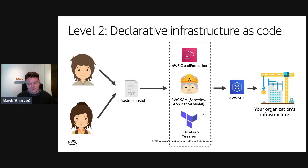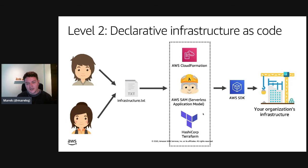Level two is where you use a more tailored tool to create your infrastructure on AWS. A couple of examples — not all tools available — include declarative infrastructure as code tooling like CloudFormation or the Serverless Application Model, which is tailored towards serverless development on AWS. You could also use a third-party tool such as HashiCorp Terraform to manage and create your infrastructure.